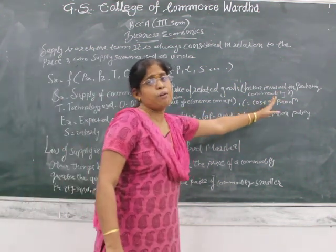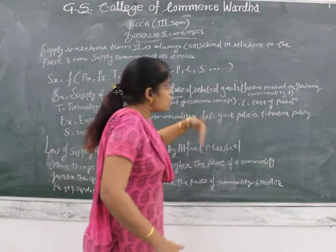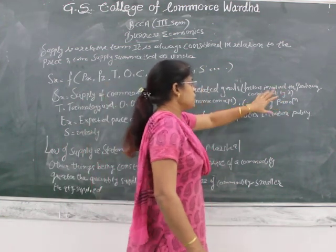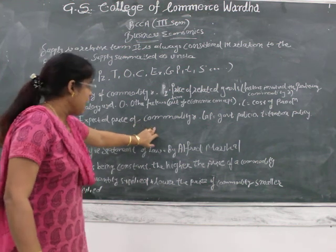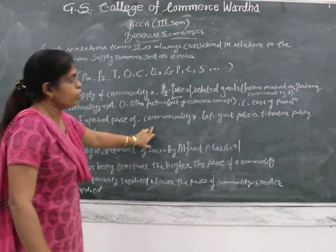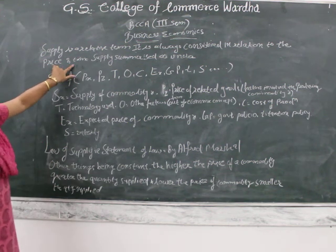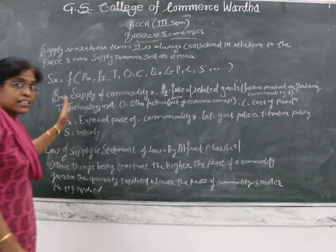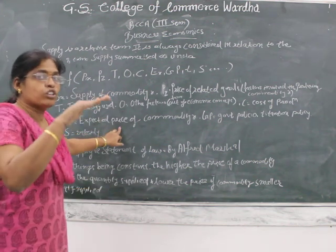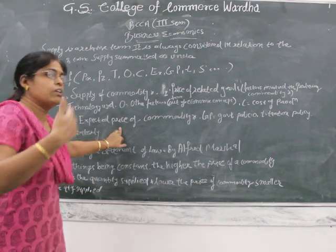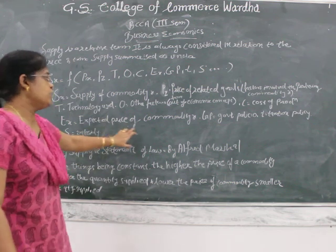C stands for cost of production — this is the main component, representing how much cost the producer has spent on producing the commodity. EX stands for expected price of commodity X. Since supply is a relationship between price and time, the seller waits for prices to go up or down. If prices are high, he will sell more product to earn maximum profit.